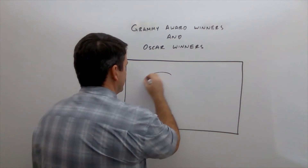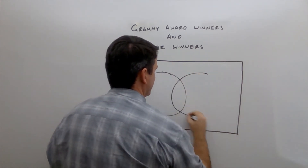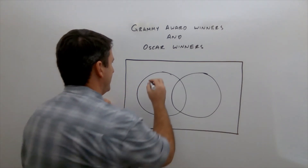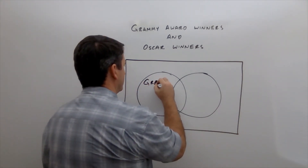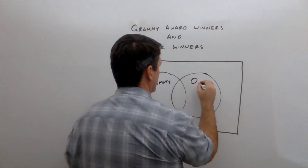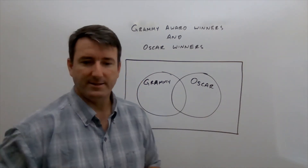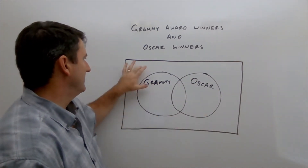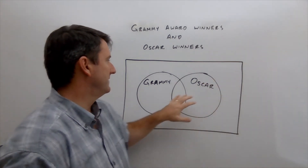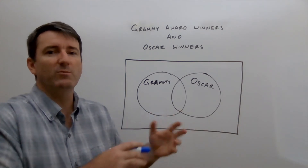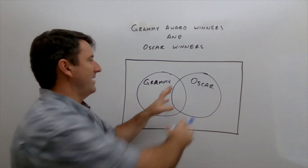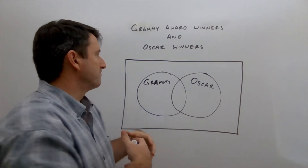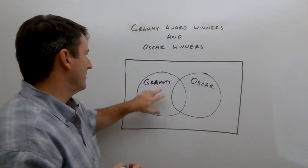We draw overlapping sets by drawing two circles that intersect one another. We label one circle Grammy Award winners and the other Oscar Award winners. To illustrate what each region represents, let's put one person in each region.